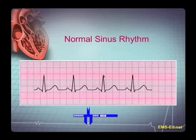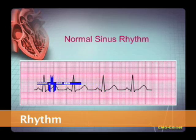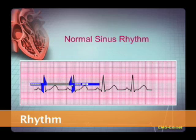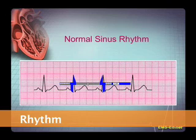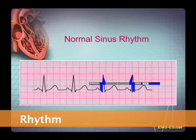Now let's look at the rhythm. Is it regular, and how would we know? We measure the distance between R waves again. It's about four and a half big boxes between R waves. So let's take our calipers and try to be a little bit more accurate. We measure from successive R wave to successive R wave — and successive R waves seem to be about the same. Therefore, the rhythm is constant.